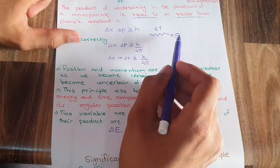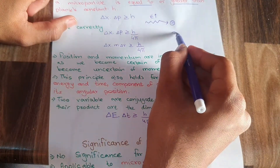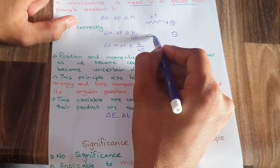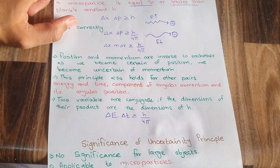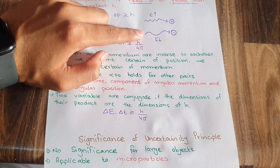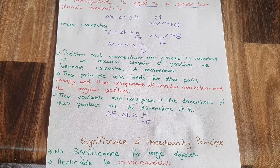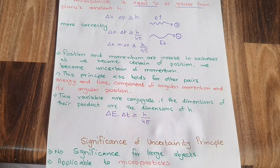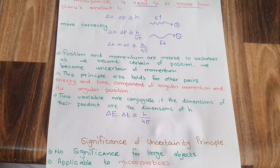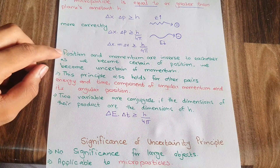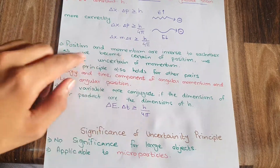Similarly, if I want to find the momentum of the same particle, I will have to use a longer wavelength, which means less energy. More wavelength means that the position of the electron cannot be found, since the electron is very small. If I take the wave with a larger wavelength, then we become uncertain about the position but we can find the momentum. So as we become certain about the position of the particle, we become uncertain about the momentum — this is what the Heisenberg Uncertainty Principle is saying.